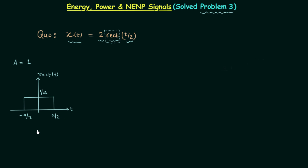In other rectangular signals it is not required that the total area equals 1, but here if you calculate the total area it is height times width. Height is 1/a and width is a, so total area equals 1 — thus this is a unit rectangular signal.